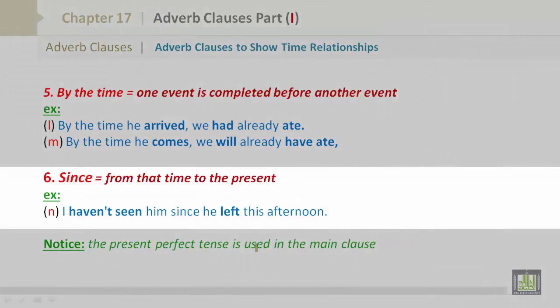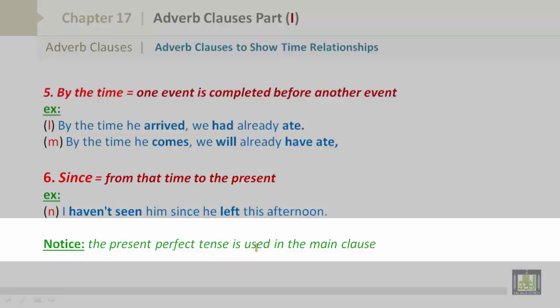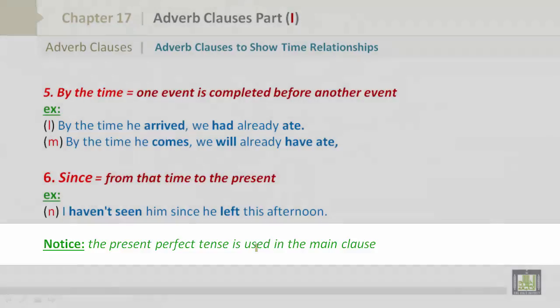Number 6 is since, from that time to the present. For example, N, I haven't seen him since he left this afternoon. Notice, the present perfect tense is used in the main clause.